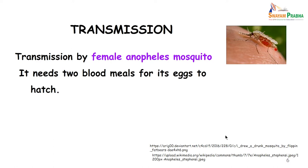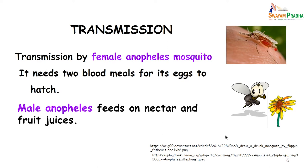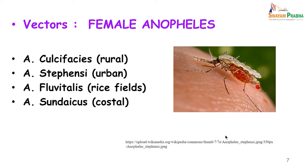Transmission of the parasite is by the female Anopheles mosquito, which needs two blood meals for its eggs to hatch. The male Anopheles mosquito feeds on nectar and fruit juices. The common female Anopheles mosquitoes which transmit the disease in India are Anopheles culicifacies, Anopheles stephensi, Anopheles fluviatilis, and Anopheles sundaicus. All these are found in different regions of our country.